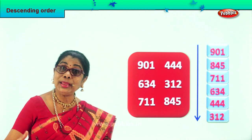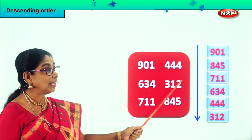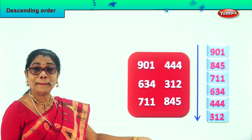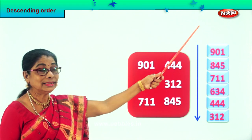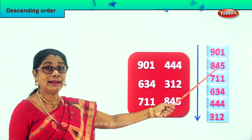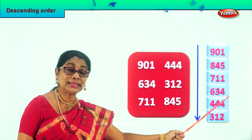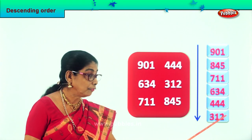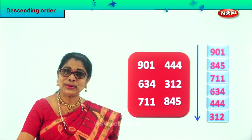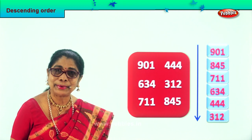Today we learned together to pick the numbers and put them in descending order, beginning with the biggest. Nine hundred and one, eight hundred and forty-five, seven hundred eleven, six hundred thirty-four, four hundred forty-four and three hundred and twelve. Did you enjoy the exercise? Good. Shall we take another sum?